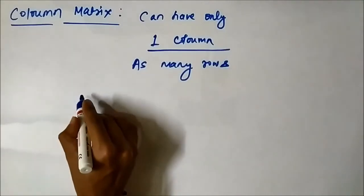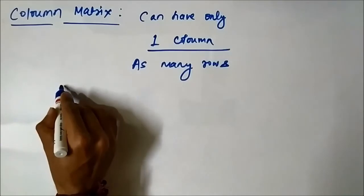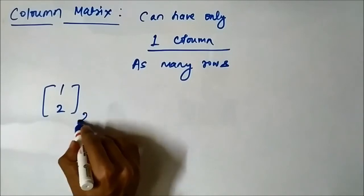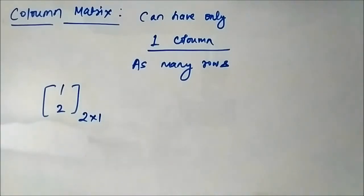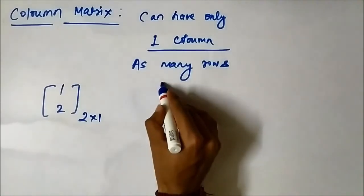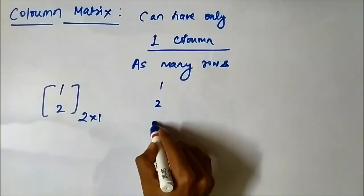So let's say an example of column matrix is this: a 2 cross 1 matrix. It has 2 rows but only 1 column. Similarly, [1, 2, 3]. It has 3 rows but only 1 column.